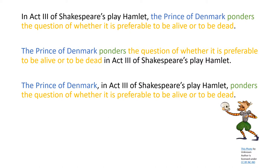For instance: 'The question of whether it is better to be alive or to be dead is pondered by the Prince of Denmark in Act 3 of Shakespeare's play Hamlet.' Or, even worse: 'Pondering the question of whether it is better to be alive or dead is the Prince of Denmark in Act 3 of Shakespeare's Hamlet.' As you can see, tampering with the SVO structure typically obscures a sentence's meaning. Writers who cultivate a clear subject-verb structure can convey complex information in sentences that are straightforward and relatively easy to understand.